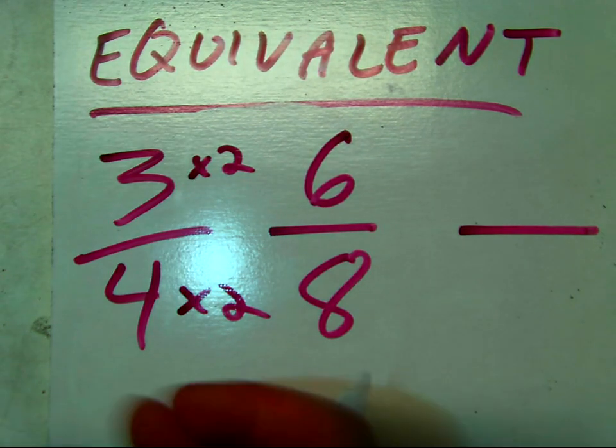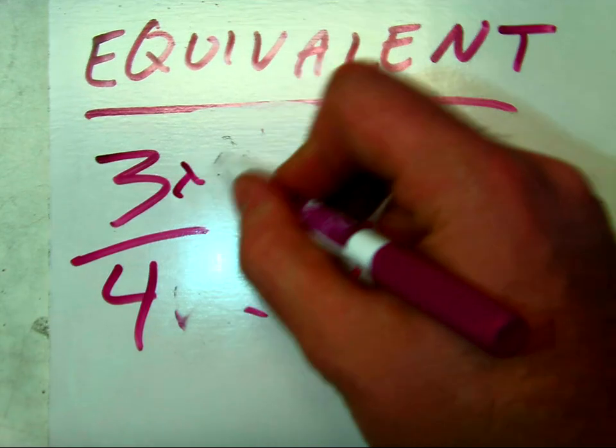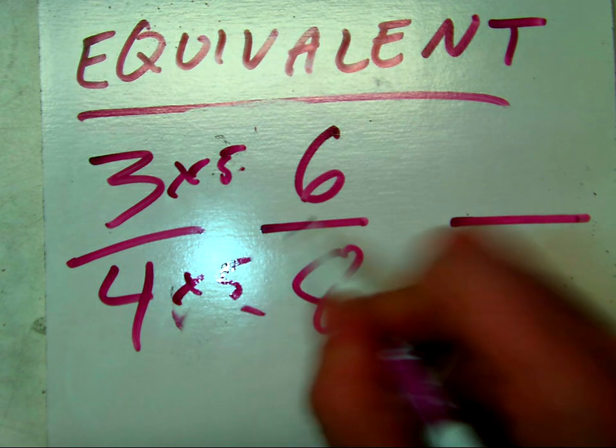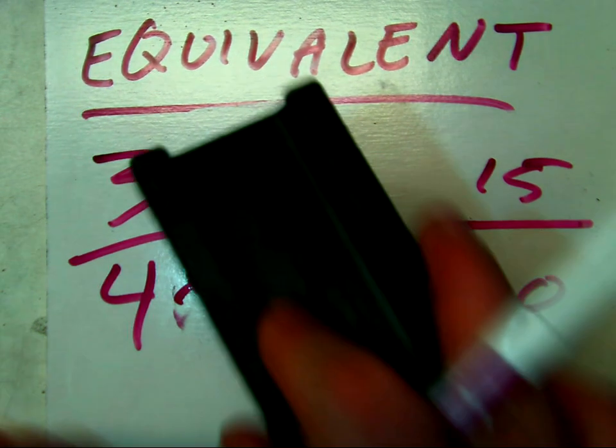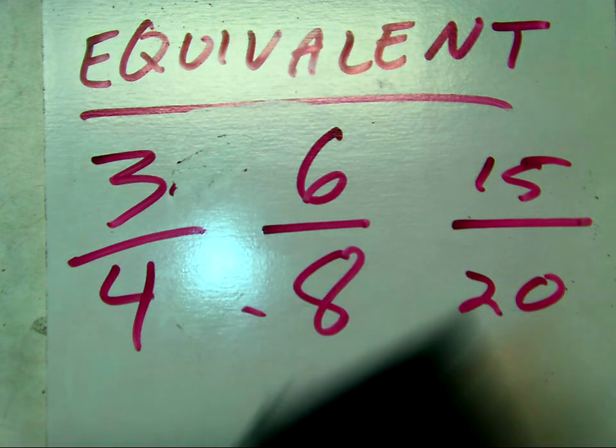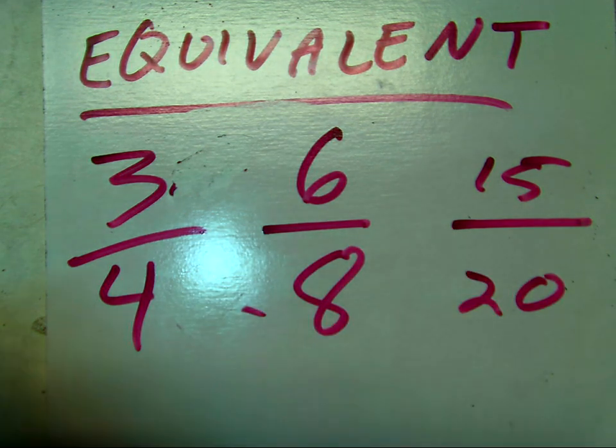If I wanted to, I could write six-eighths. I could also write it as, why not? I can do five. Three times five is fifteen. Four times five is twenty. I could have also done times two. I could have done times seven. I could have done times ten. I could have done times a million. They all would have been the same. The relationship between the top and bottom remains the same.